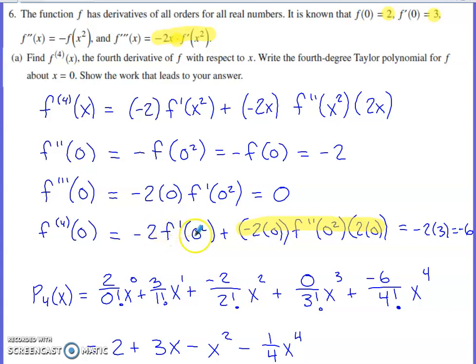So I really end up with -2 times f'(0). f'(0) is 3, so -2 times 3 gives me -6. So I've produced the rest of these terms...